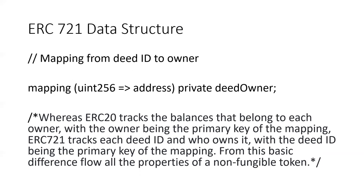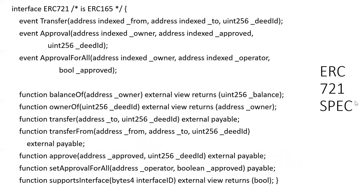So the key difference is that instead of tracking balances, we're associating addresses with unique items. The ERC-721 specification includes events and functions somewhat similar to ERC-20 but different: a transfer function to transfer ownership, a balance-of function, an owner-of function to return who owns an item, transfer-from, and approval functions to approve transfers.